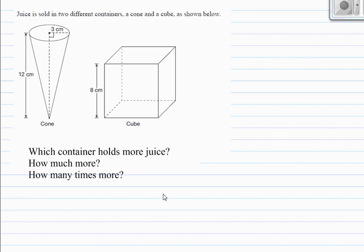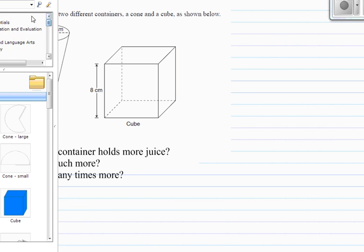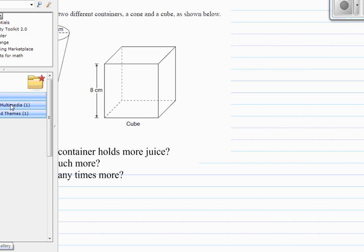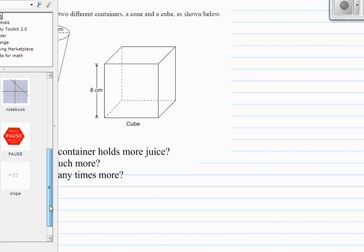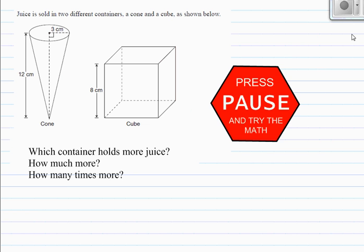So let's look at the first question. It says juice is sold in two different containers, a cone and a cube as shown below. So we have a simple straightforward cone and we have a cube. It says which container holds more juice, how much more and how many times more. So obviously this is a volume question. When we're talking about an object holding something, so being contained by something, that's a volume issue. So I'm going to ask you to press pause. And what I want you to do is I want you to try the question on your own and then compare your answer to mine. So go ahead and press pause and we'll see you on the flip side.